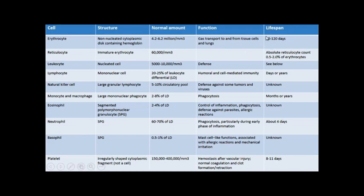Erythrocytes can last up to 120 days. We will also study precursor cells like reticulocytes, which are immature erythrocytes normally representing a very small proportion of total erythrocytes in circulation. Whether reticulocytes are decreased or increased in number is very important for the differential diagnosis of different types of anemia.